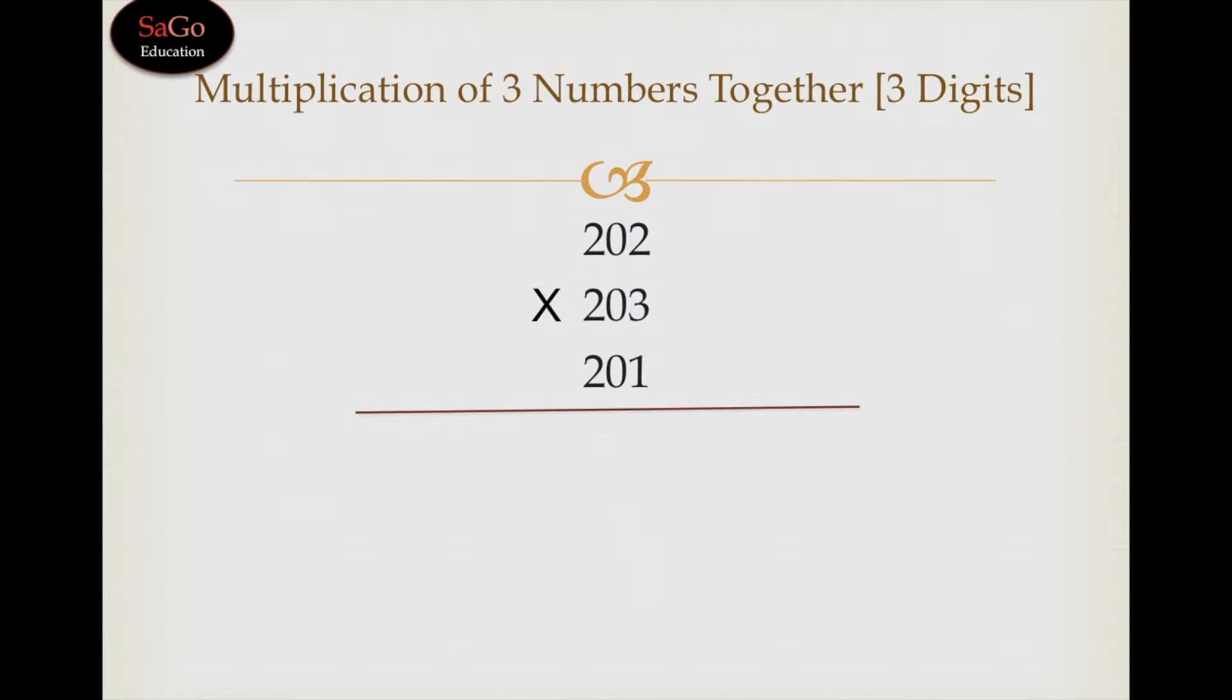In this video, we learn how to multiply three 3-digit numbers together. Here all the numbers are above base. 202 is 2 above its base 200, 203 is 3 above its base 200, and 201 is 1 above its base 200. Now multiply these three numbers together.